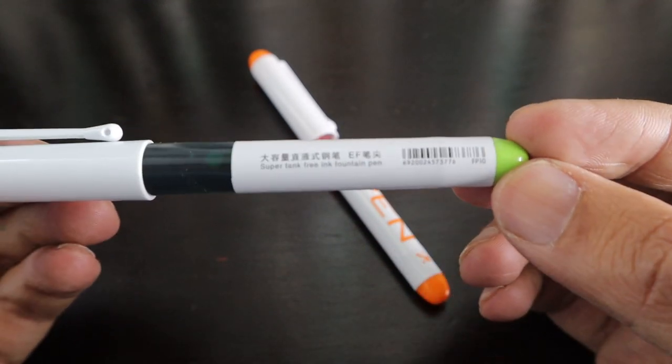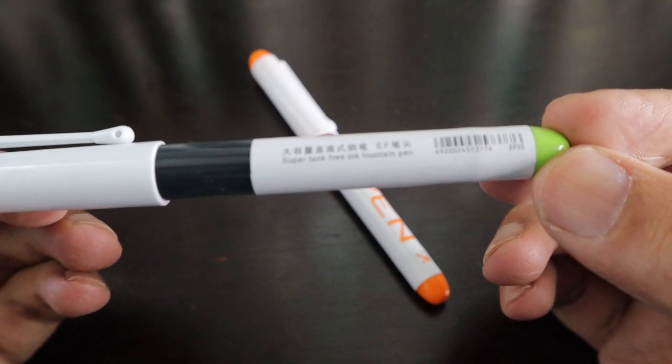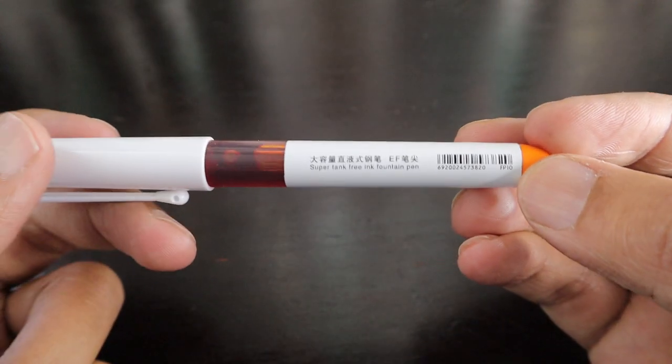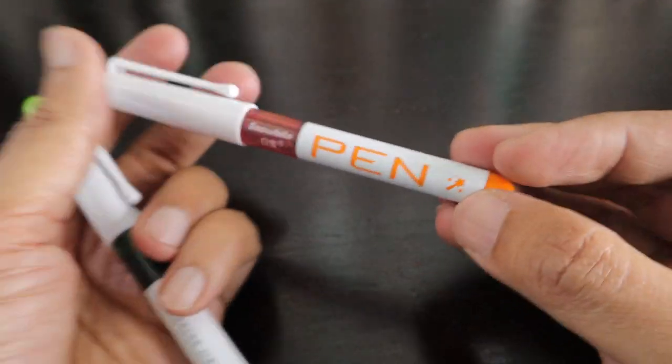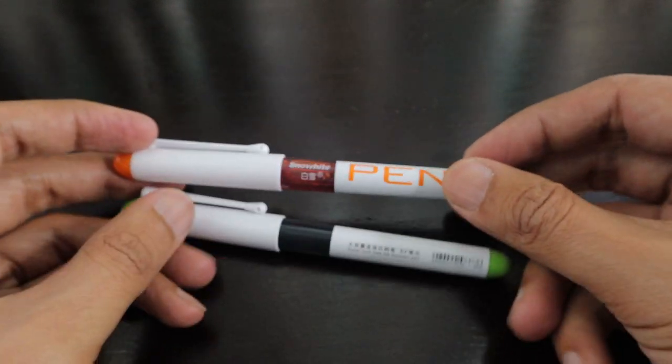With the number called FP10, and it mentions super tank free ink fountain pen in EF. So both of these pens are in EF nib and this one is a little bit unique as compared to the FP20.